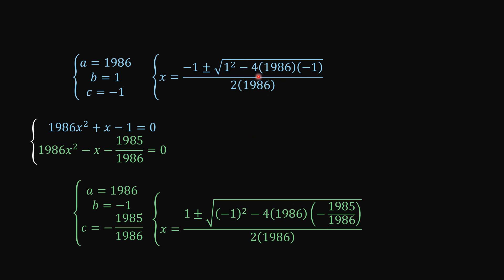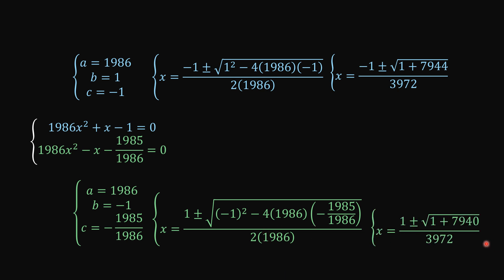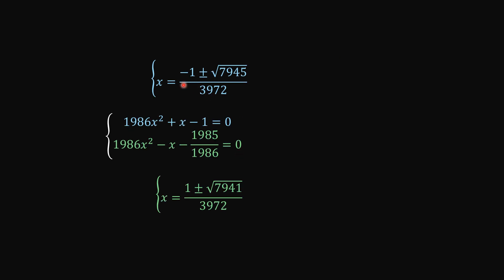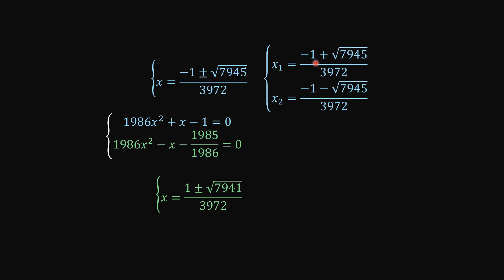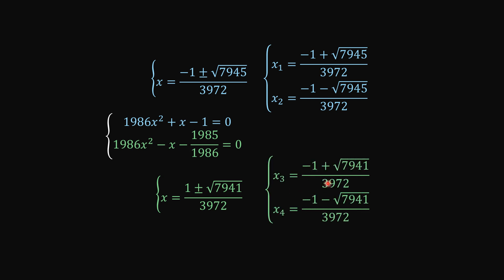Getting back to the equation in blue, the product of this term gives us this, and after some simplification we have this. So this is going to be 7945, and this is going to be 7941. These are our equations and these are the solutions we got. So x1 equals this, x2 equals this, x3 equals this, and x4 equals this. We have four solutions for our original equation.